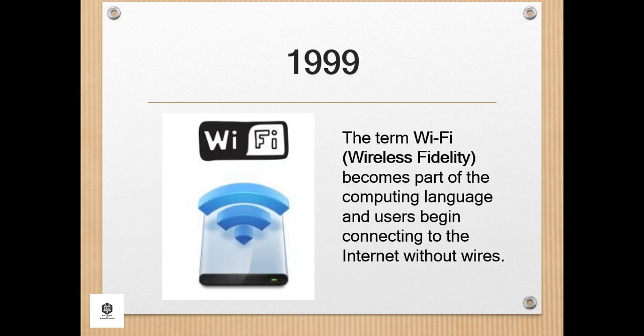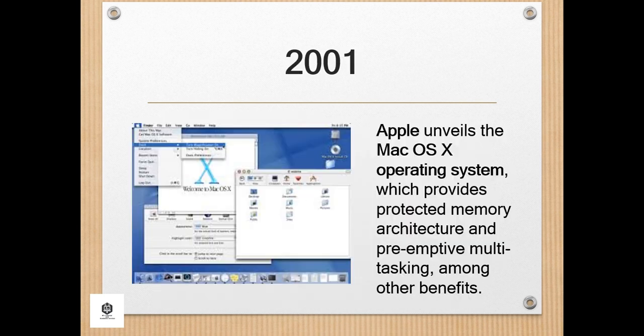In 1999, the term Wi-Fi, or wireless fidelity, became part of the computing language and users began connecting to the Internet without wires. Wi-Fi is a wireless networking technology that allows devices such as computers — laptops or desktops — mobile devices such as smartphones and wearables, and other equipment such as printers and video cameras to interface with the Internet.